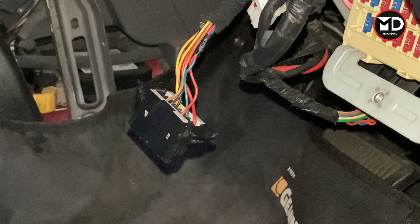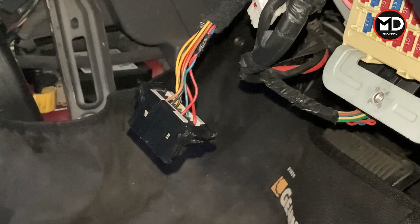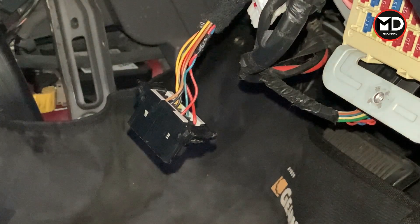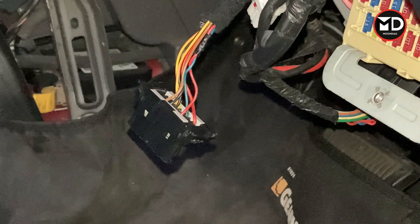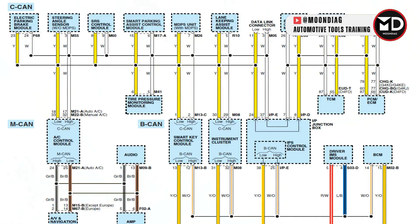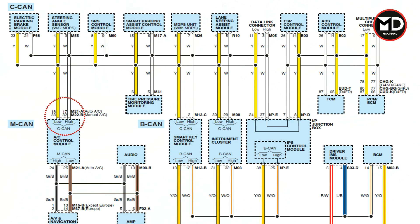The high-speed CAN bus is connected between the engine control module, transmission control module, instrument cluster, four-wheel drive, electronic power steering, and other critical control units. The high-speed CAN bus network you see right now on the wiring diagram on screen shows multiple control units connected to this network. The network itself consists of a pair of twisted wires — one is CAN high and the other one is CAN low. These CAN high and CAN low are not representing speed; they are each a single wire of the network.